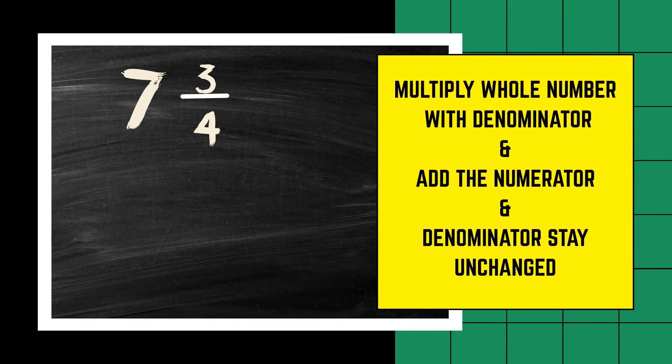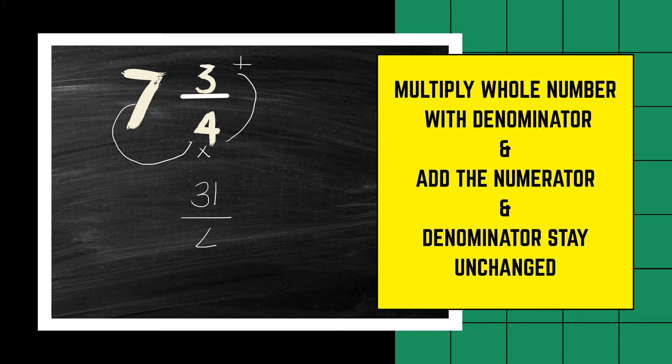Now pause and you first try, and then hit play again to see if you got this one right. We start off by using the whole number and multiplying it with the denominator. 7 times 4 is 28. Thereafter we add the numerator. 28 plus 3 is 31. And the denominator must stay unchanged. 7 and 3 quarters as an improper fraction is written 31 over 4.